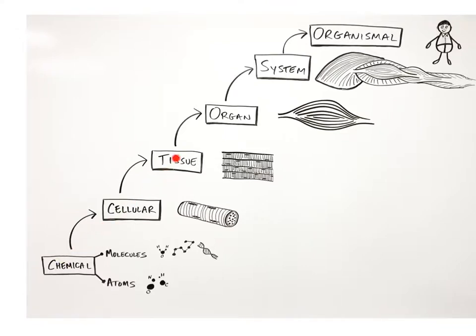Remember the levels of organization that we reviewed earlier in the course? The lowest level of structural organization is based on chemistry and consists of atoms and molecules. Atoms are bonded together into larger molecules, such as sugars and proteins, which act as the foundation for the structure and function of cells, the smallest units of life.